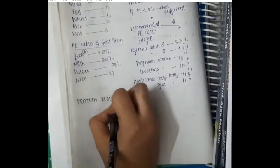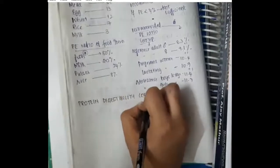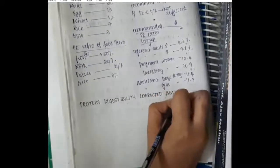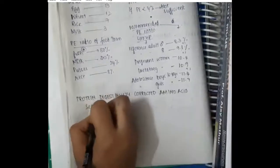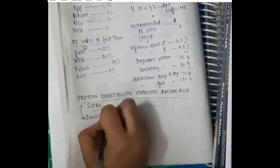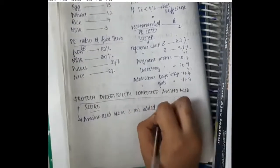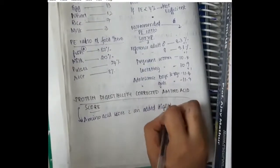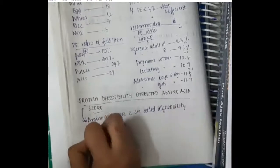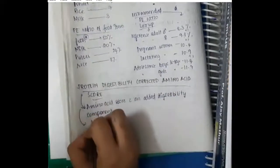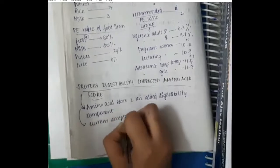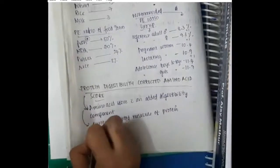We will now see different protein scores. Protein digestibility corrected amino acid score, or PDCAAS, is the amino acid score with an added digestibility component. It is the current accepted measure of protein quality.